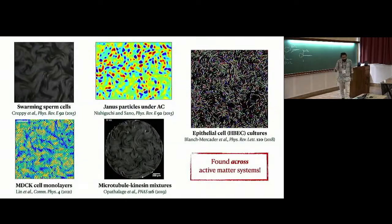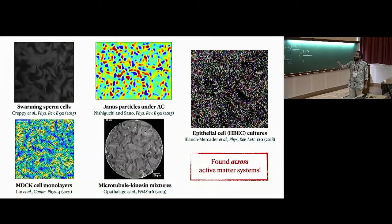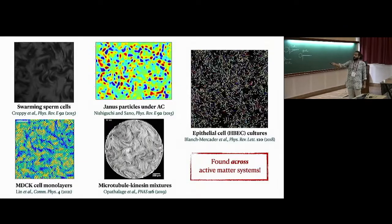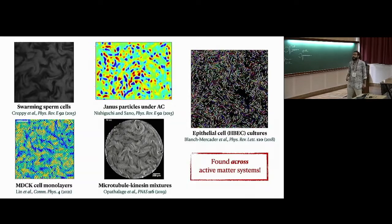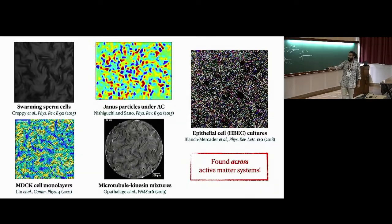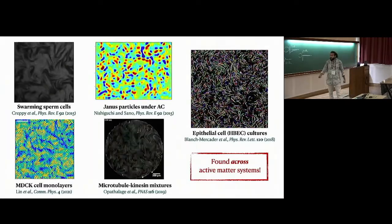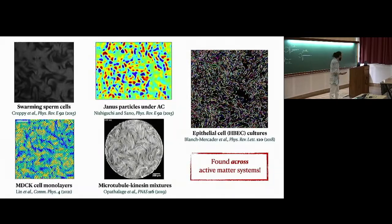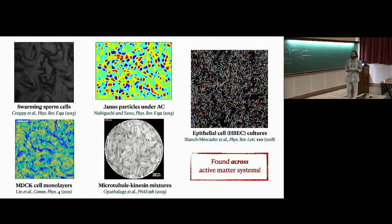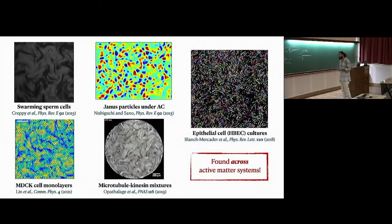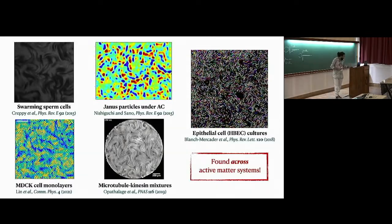This turbulence-like state is not pathological to bacteria — you see it across active matter systems, including non-living ones such as epithelial cells and microtubule-kinesin mixtures. There are many more systems where this behavior has been found. People really want to know: what are the properties of these flows, can you control them, and if it looks like turbulence, is it really turbulence? This is what my talk will mostly focus on.